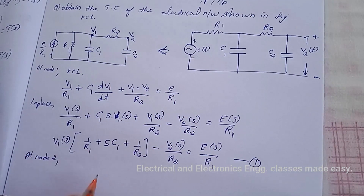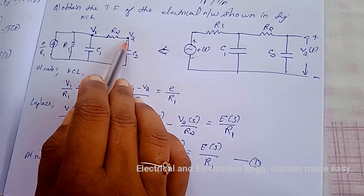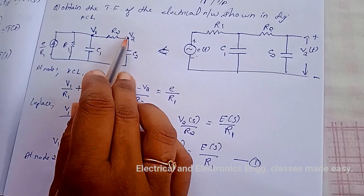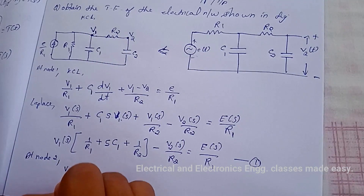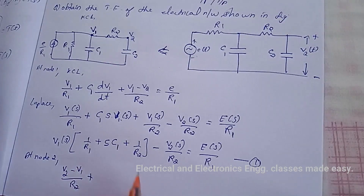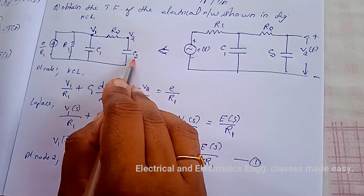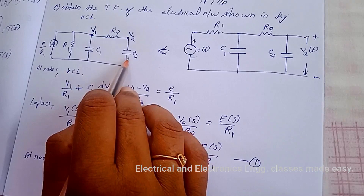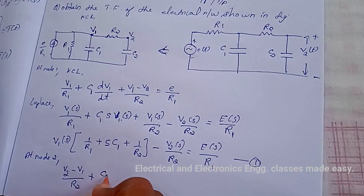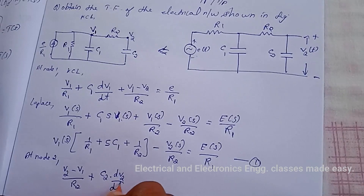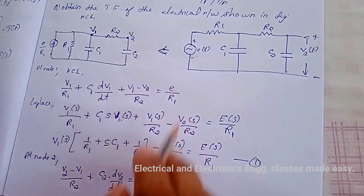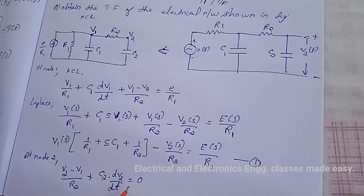At node 2, we write the KCL equation. The current through R2 is (v2 - v1)/R2, plus the current through capacitor C2 which is C2·dv2/dt, equals zero, because there is no current source at this node.